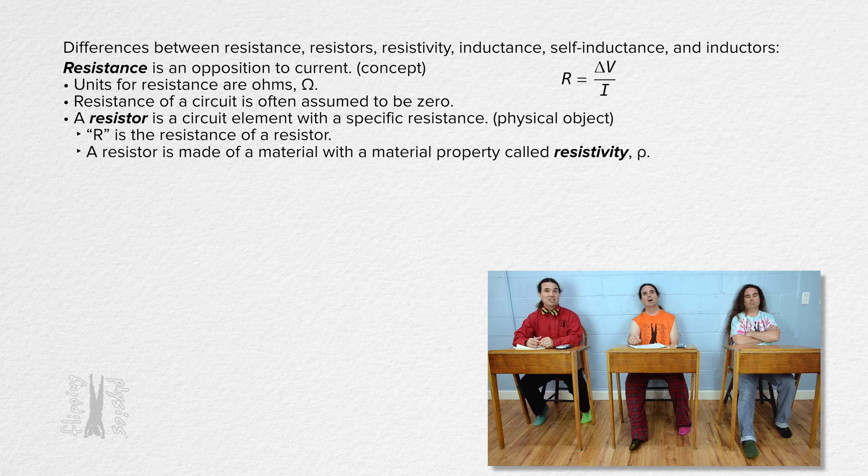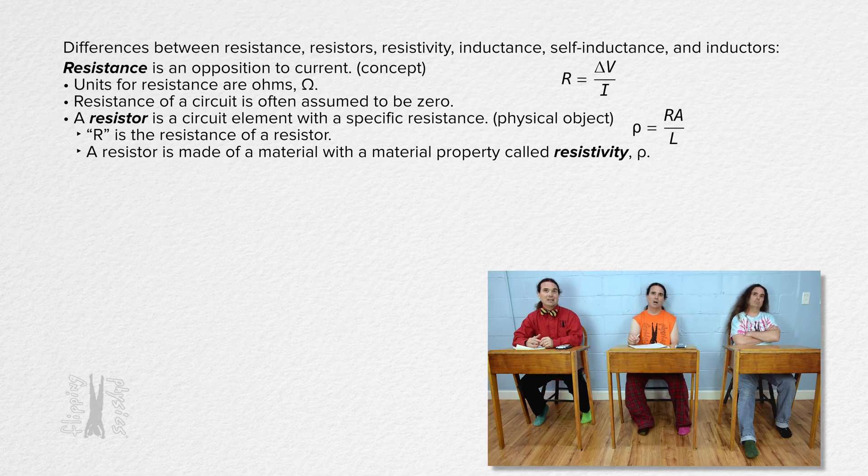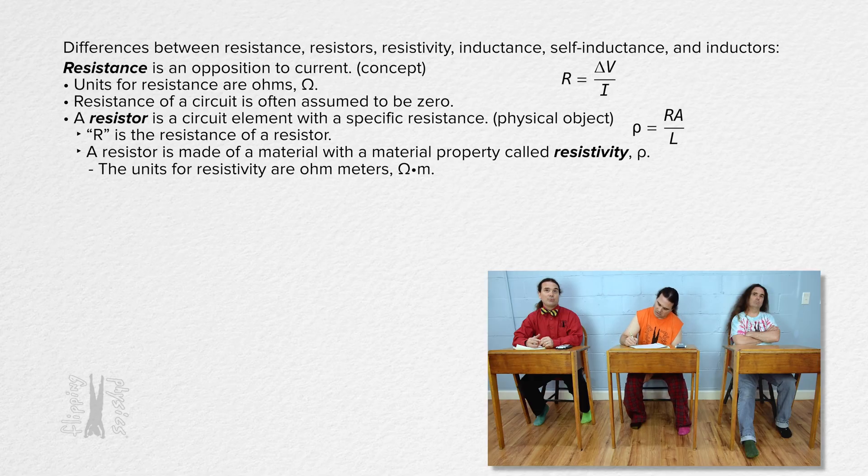A resistor is made out of a material which has a material property called resistivity. Resistivity, lowercase rho, equals resistance times cross-sectional area all divided by resistor length. The units for the material property resistivity are ohmmeters.